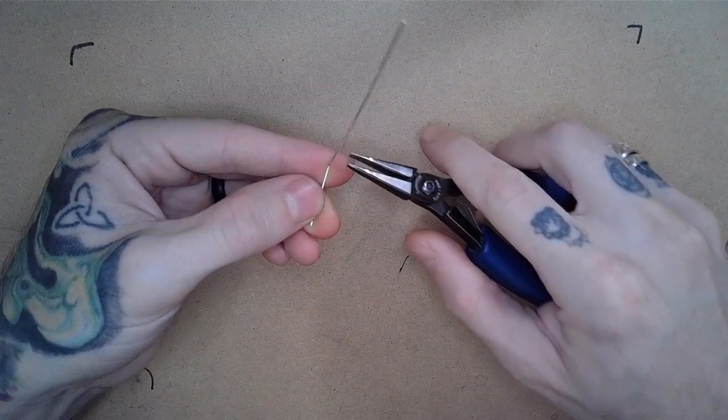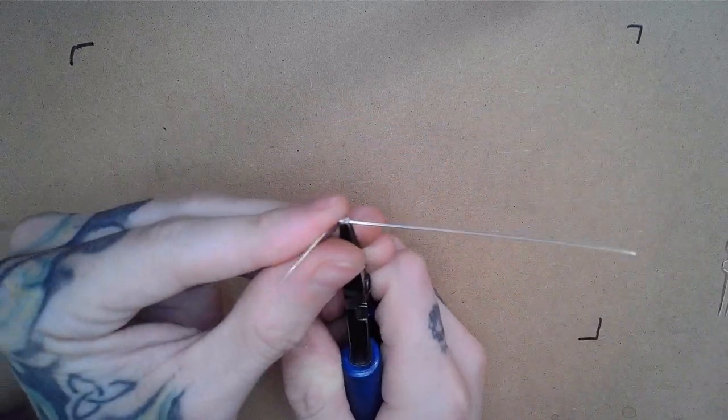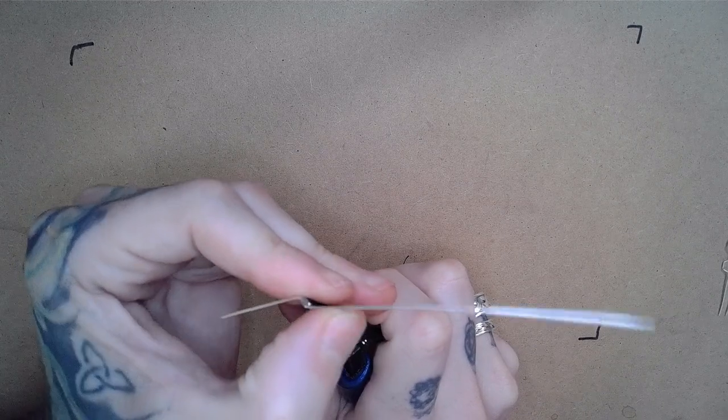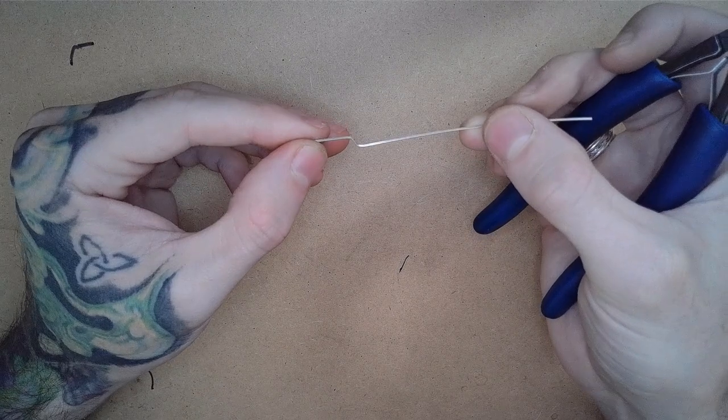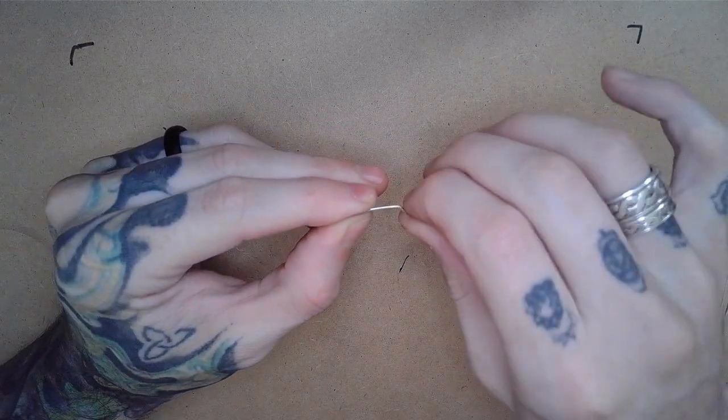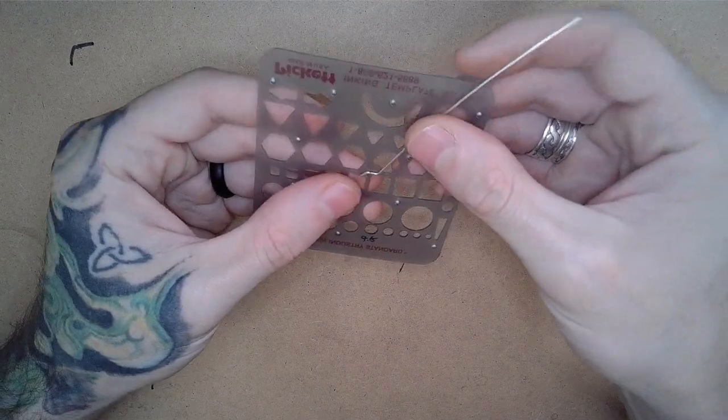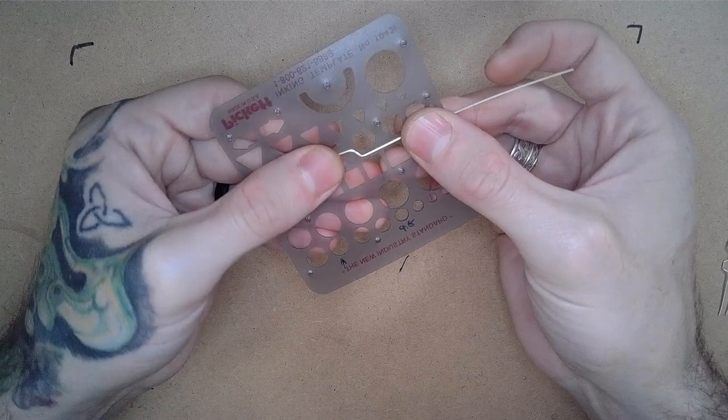My next move will be to pinch that wire flush in my pliers and bend the next angle into our wire. If I want to go back and check, I can make sure that it's sitting approximately like so.